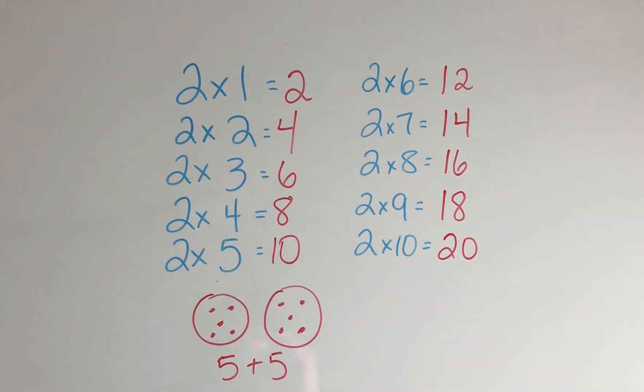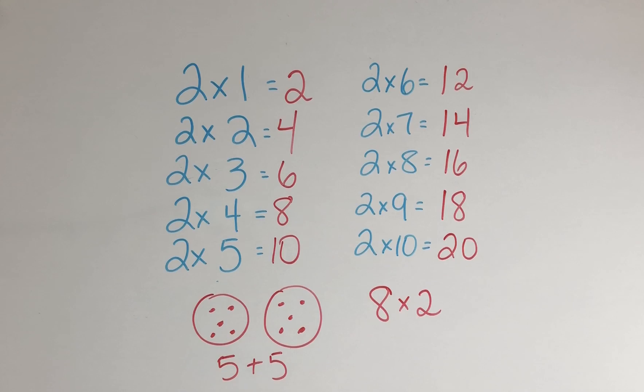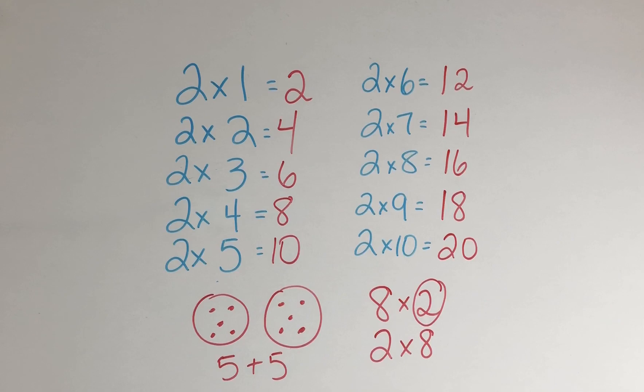Now remember that even if you are solving something like this, 8 times 2, we can still think of this as the double of 8 because we know that it does not matter which order we write the factors in. So remember that if you see a problem to solve where even one of the factors is a 2, you can still use this strategy.